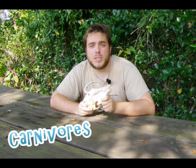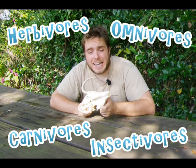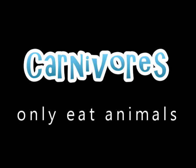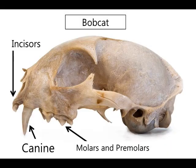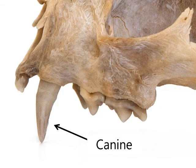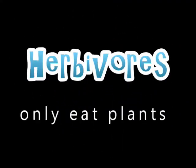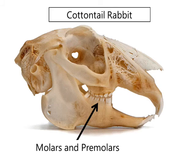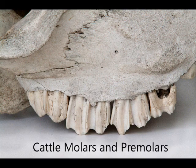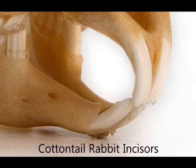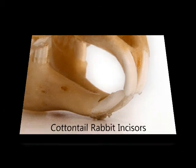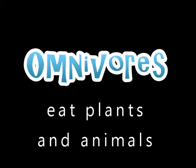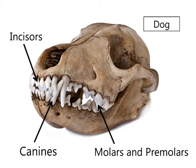Teeth are a great way to figure out what an animal eats. Mammals are often called carnivores, herbivores, omnivores, or insectivores based on what they eat. Carnivores are animals that only eat other animals, usually by hunting them. They have sharp and pointed teeth to kill their prey and shred their flesh, and their large canines are used for puncturing the skin of their prey. Herbivores are animals that only eat plants. They have flat teeth in the back of the mouth called molars and premolars, and long chisel-like teeth in the front called incisors. The molars and premolars are for grinding down plant material, and the incisors are for biting off parts of plants to chew. Omnivores eat both plants and animals and have all four types of teeth, with a combination of flat and pointed.